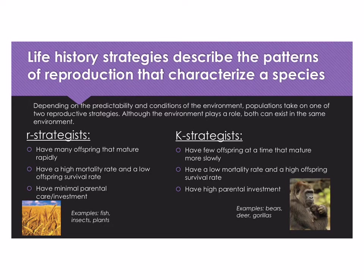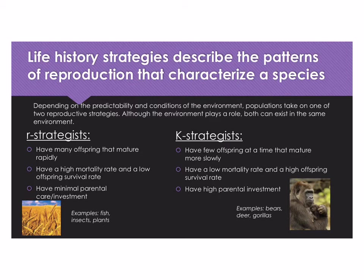The other strategy is the K-strategist. In this reproductive strategy, individuals have few offspring at a time, they mature slowly, there's a lot of parental investment so they take care of their babies for a long time, and there is a lower mortality rate and a higher offspring survival rate. The idea for K-strategists is to invest a lot in one or a few offspring. Examples of K-strategists are many mammals: bears, deer, gorillas, and humans.